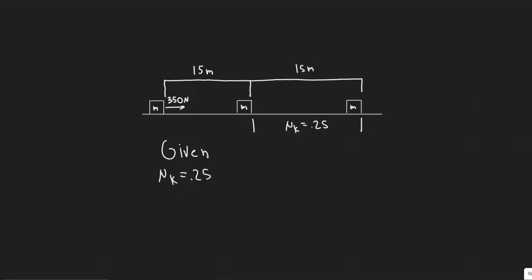In this problem, a 96-kilogram crate starting from rest is pulled across a floor with a constant horizontal force of 350 newtons. For the first 15 meters the floor is frictionless, and for the next 15 meters the coefficient of friction is 0.25. What is the final speed of the crate?